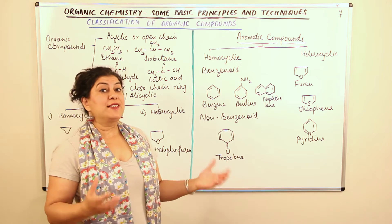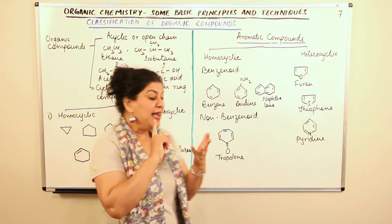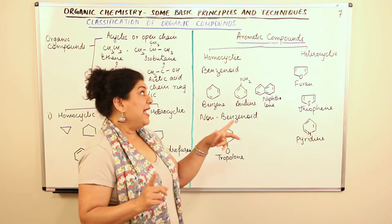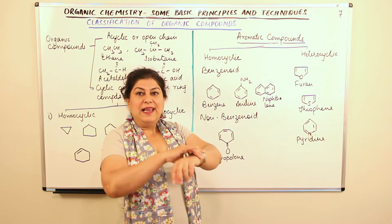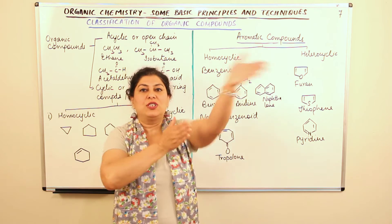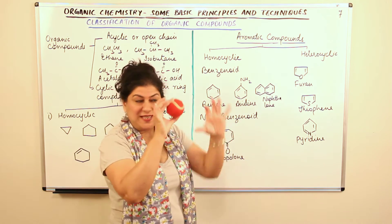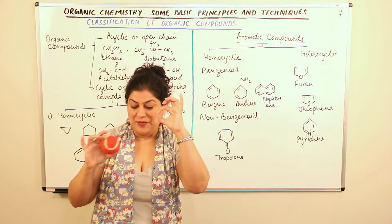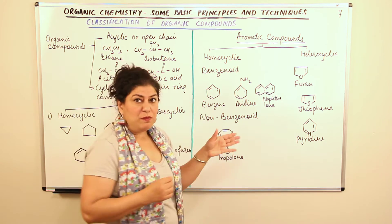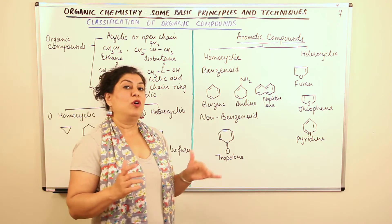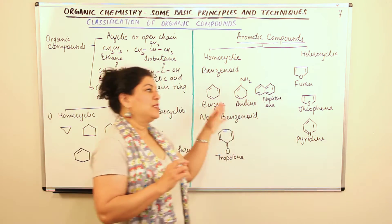What causes aromaticity? The compound should be cyclic and planar. Think of a bangle — it is cyclic, it is planar, it does not shoot out in three dimensions, it is like a circle or a ring. It should have alternating double bonds, and since it has alternating double bonds, the pi electrons of the second bond are free to move around.